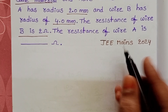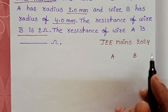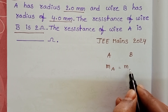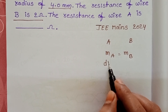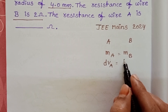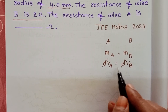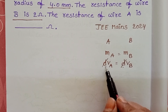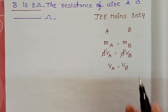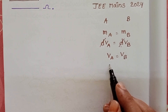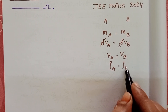In the given question, two wires A and B are made up of the same material and have the same mass. Mass of the first wire equals mass of the second wire. We know mass equals density into volume. Since they are made of the same material, densities cancel out, so volume is also the same. Volume of wire A equals volume of wire B. Since same material, resistivity is also the same — resistivity of wire A equals resistivity of wire B.